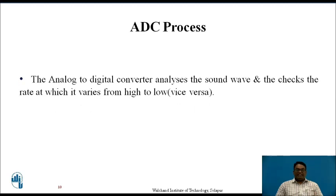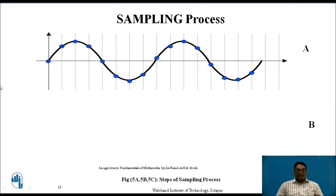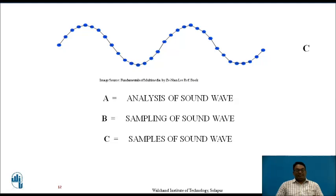So what is the ADC process? Analog to digital conversion takes place on a sound wave. First, the sound wave is analyzed to see where the high and low variations are. Then the sampling process is used for the conversion. Looking at waveform A, the sound wave is analyzed — where it is at zero, where it goes to a high maximum amplitude, then back to zero. After analysis, samples are taken at different points, and C generally denotes the samples of a sound wave. In this way the sampling process takes place.